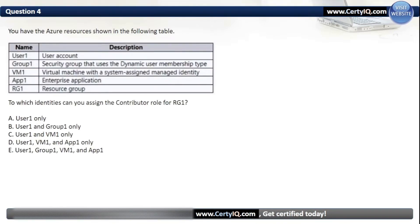Question 4. You have the Azure resources shown in the following table. To which identities can you assign the Contributor role for RG1? Our options are: A. User1 only; B. User1 and Group1 only; C. User1 and VM1 only; D. User1, VM1 and App1 only; or E. User1, Group1, VM1 and App1. The correct option is A, User1 only.